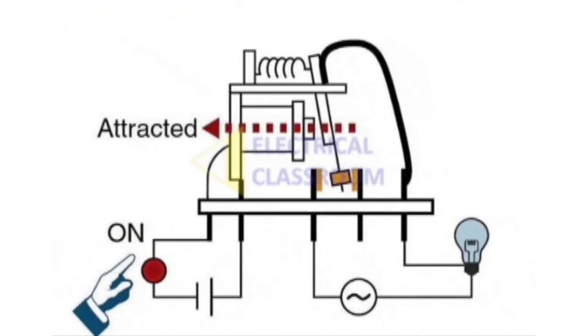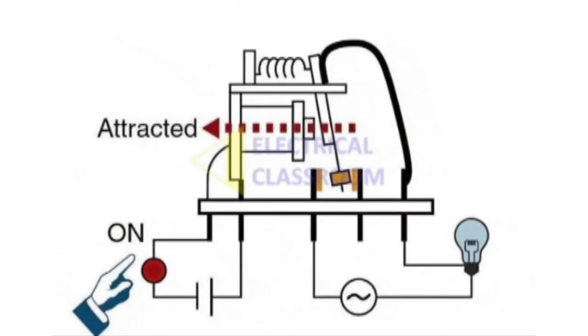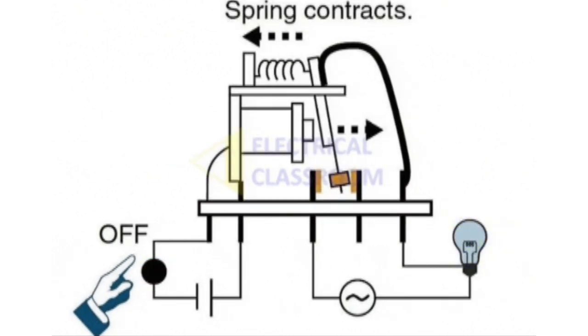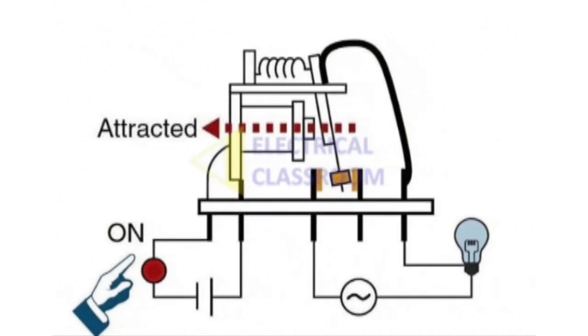Types of Relay Operations. Electromechanical Relays use a physical movement of parts. Solid State Relays use semiconductor switching with no moving parts.